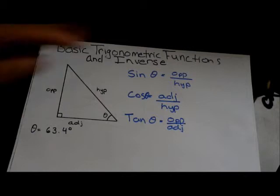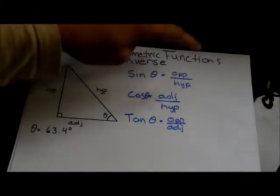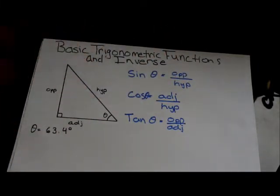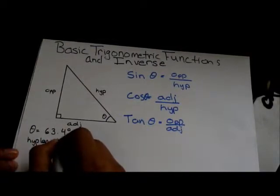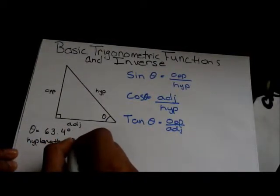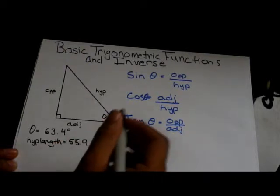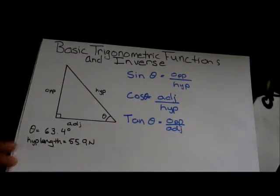So, we're given a length. Let's say the hypotenuse is equal to, hypotenuse length, equal to 55.9 newtons. That's magnitude.